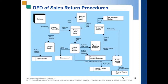When a customer returns goods, first the customer returns the packing slip. The receiving department then receives the customer's packing slip along with the returned goods. When the items are returned, the receiving department employee counts, inspects, and prepares a return slip describing the items — for example, 10 units of product A was returned, 5 of product B, and so on.